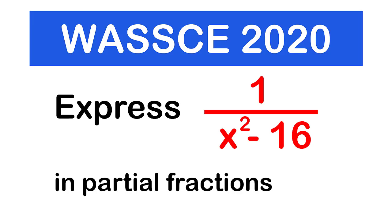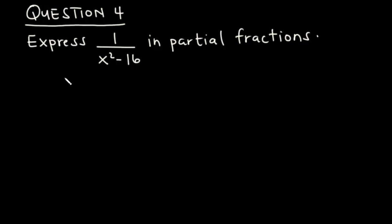In today's video we are going to solve the 2020 elective mathematics paper 2, question number 4. We are to express 1 over x squared minus 16 in partial fractions.